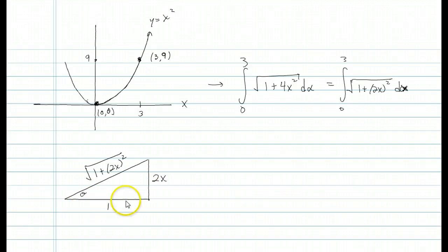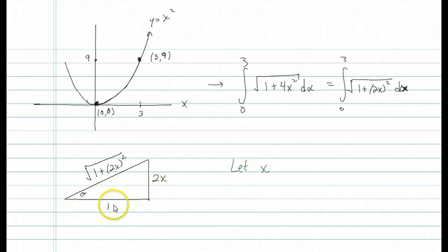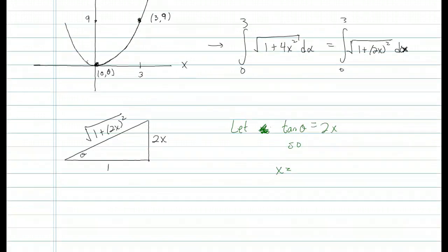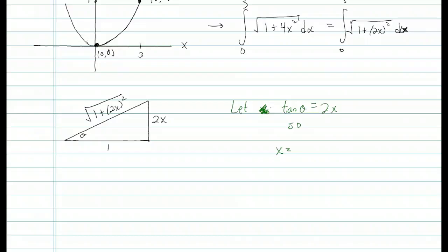If we did it the other way around it would be cotangent, so that's just done for simplicity. Reading off the figure, tangent of theta is 2x over 1, which is just 2x. So if we want to solve for x, we divide by 2, giving x equals one-half tangent theta. That is our relationship between x and theta — our declaration of x as a function of theta.